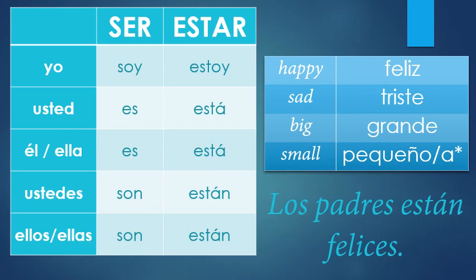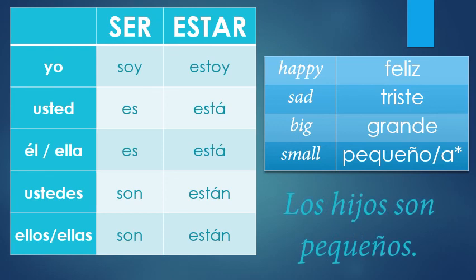How about the children? The children are small. How would you say that? How do you say children? It wasn't on the chart, but you add an S, right — los hijos. And then what would you do with pequeño? Los hijos son pequeños. Pequeños needs to match hijos.